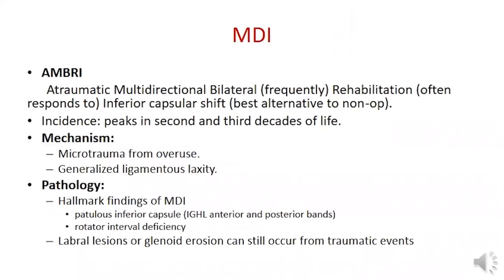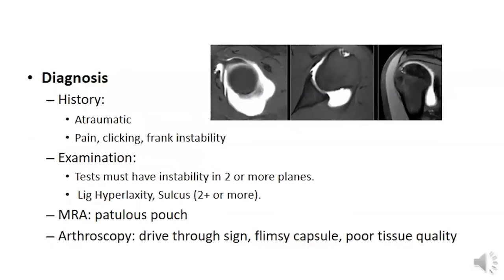Multidirectional instability is due to microtrauma from overuse or generalized ligamentous hyperlaxity. The hallmark finding is inferior capsule and rotator interval deficiency, though labral lesions or glenoid erosion can still occur from traumatic events. There is no history of trauma; the patient complains of pain, clicking, and frank instability. By examination, there must be instability in two or more directions, ligamentous hyperlaxity, and sulcus test 2+ or more. MRA shows a patulous pouch, and by arthroscopy there is a drive-through sign with flimsy capsule and poor tissue quality.